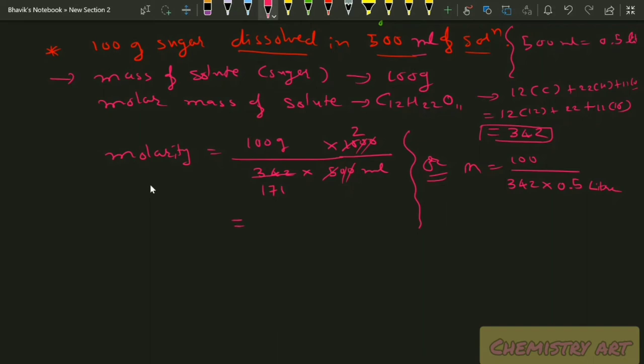Calculating: 342 × 0.5 = 171. So M = 100 / 171 = 0.584 M. The answer is 0.584 M (molar). This is how we find molarity — this is very, very important because any solution you need to prepare will use this molarity measurement.